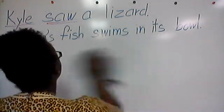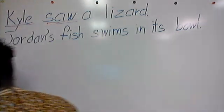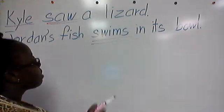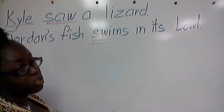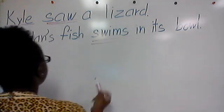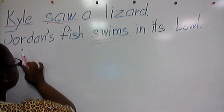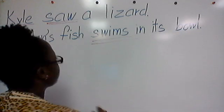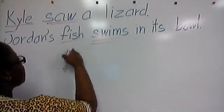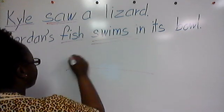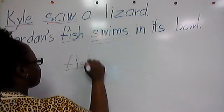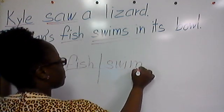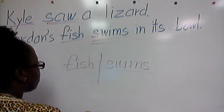Our next sentence says: 'Jordan's fish swims in its bowl.' 'Swims' is the word showing action. Some people probably wish they could go outside swimming. So who swims in its bowl — is it Jordan's? No, I don't think Jordan would be swimming in a bowl. Fish swims in its bowl. So once again, you put the subject first and then the verb. Remember, the subject is who or what is doing the action.